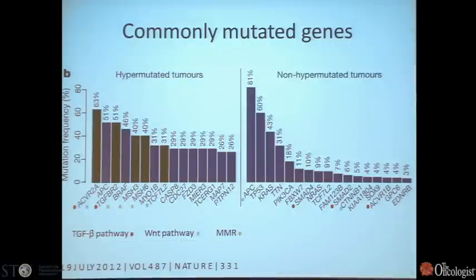This is something we've actually just started to use in the clinic, particularly in older patients or patients with diabetes — patients we may not want to give oxaliplatin to because of excess risk of toxicity or neuropathy. I'll finish up with a little more from the TCGA, since it was just published, as this will drive our development of markers in the future.